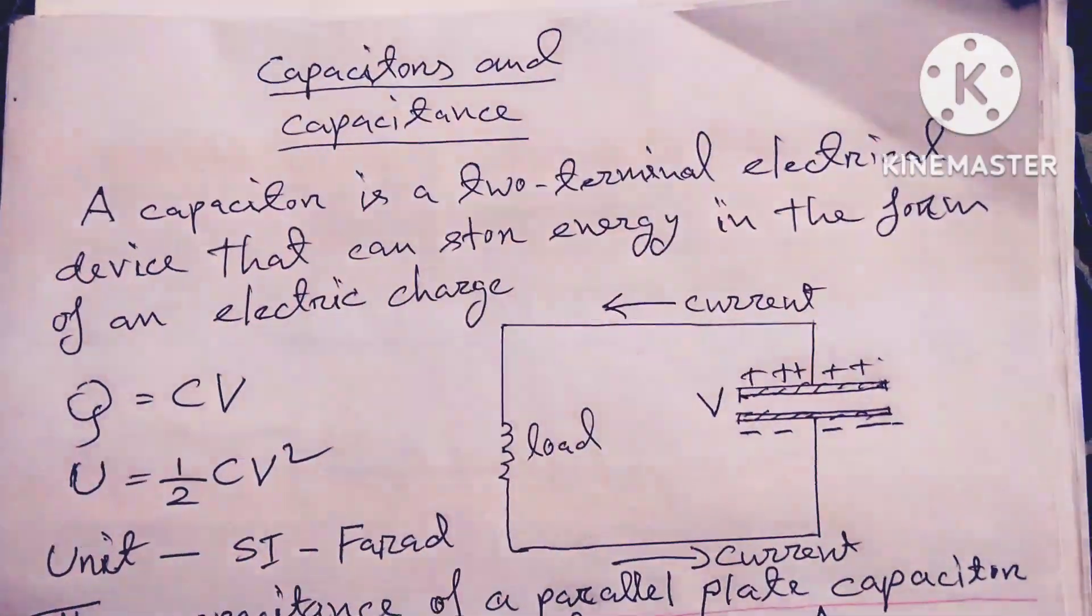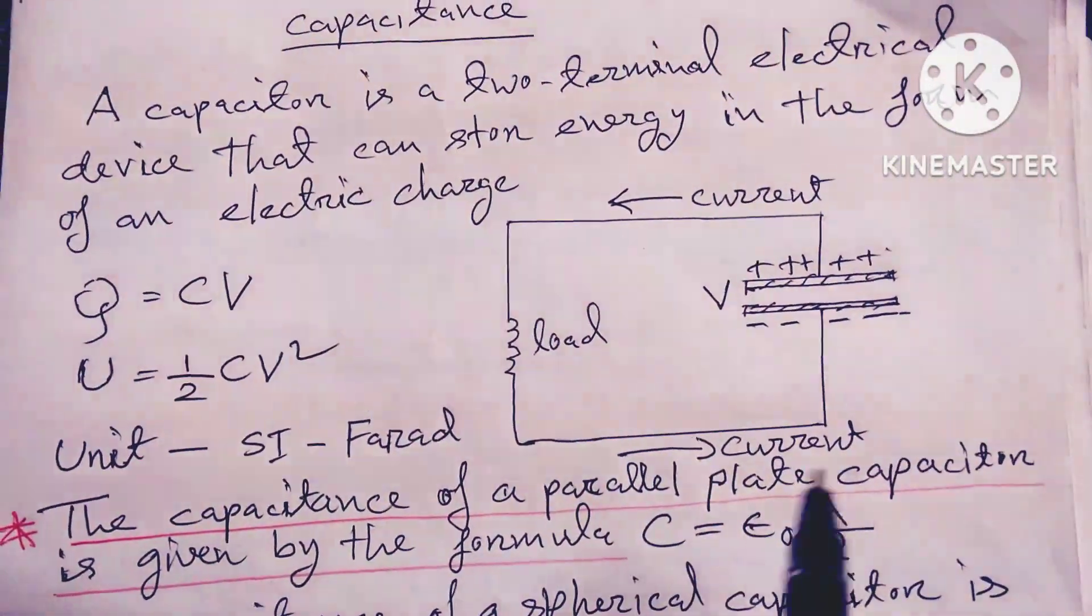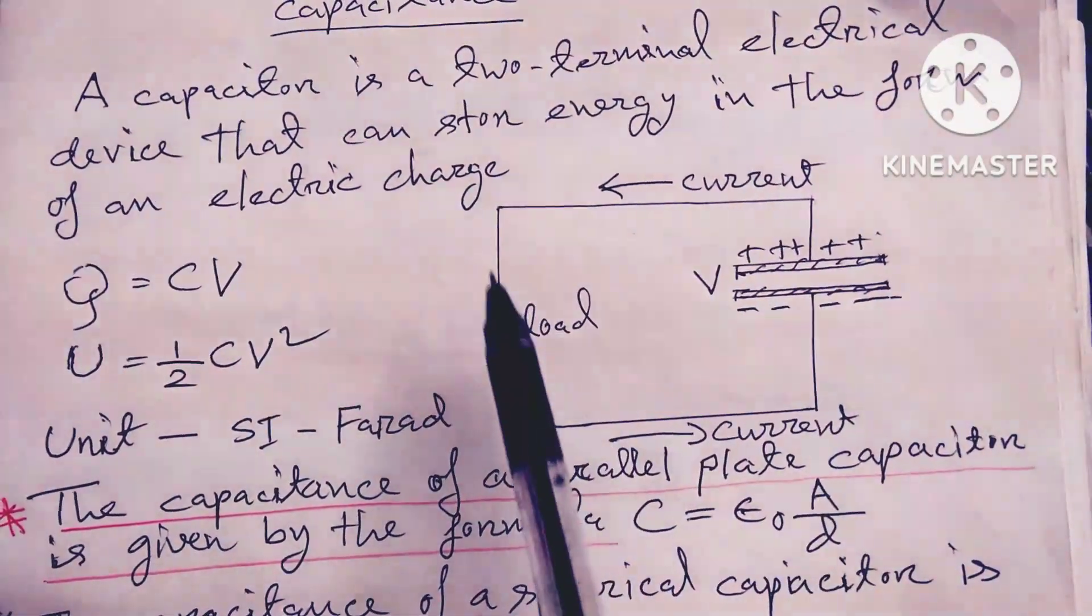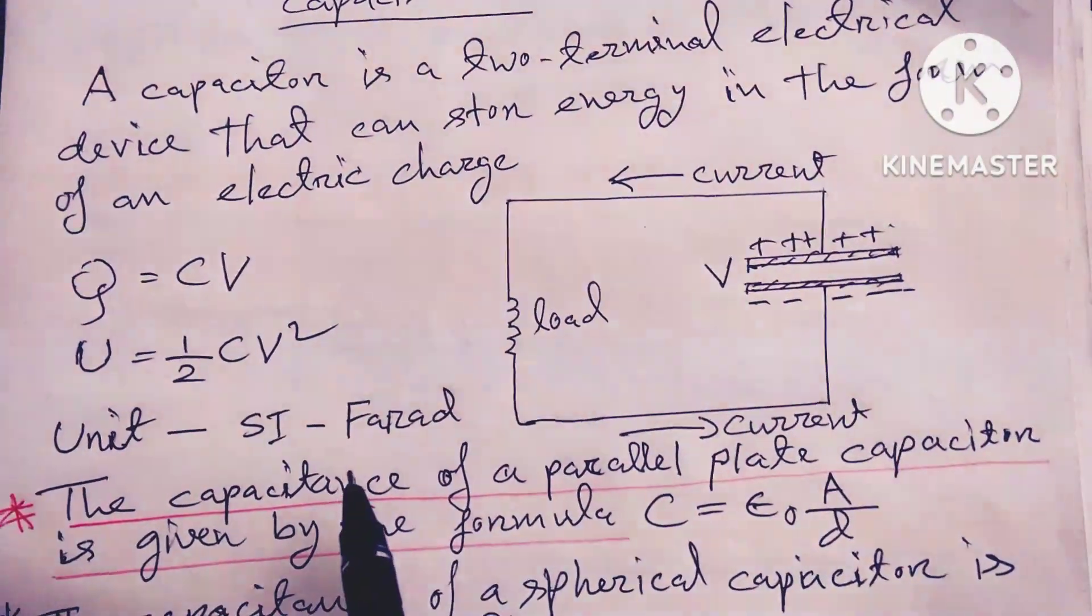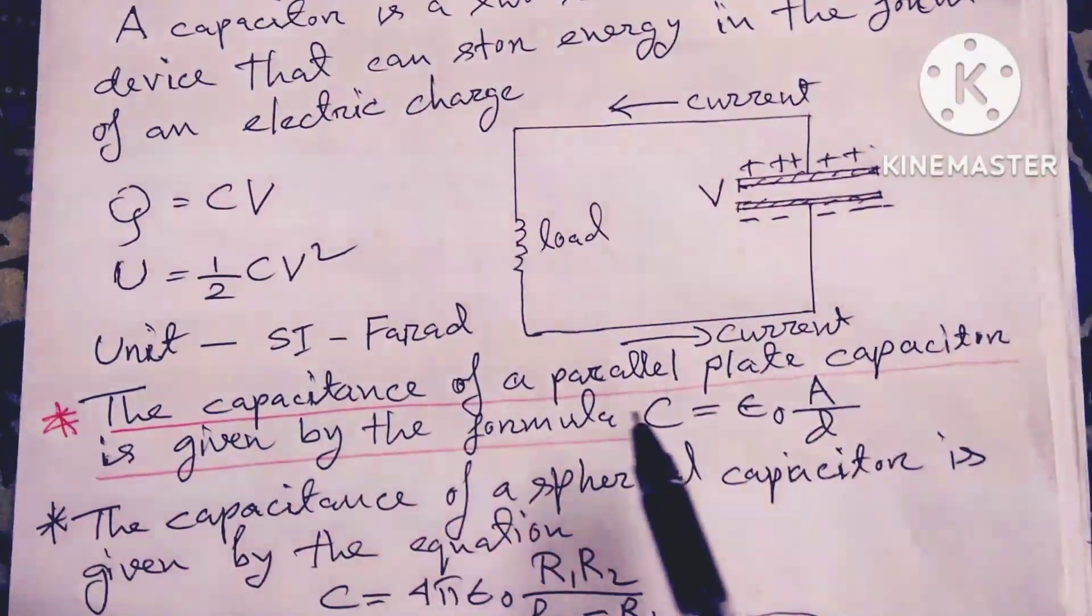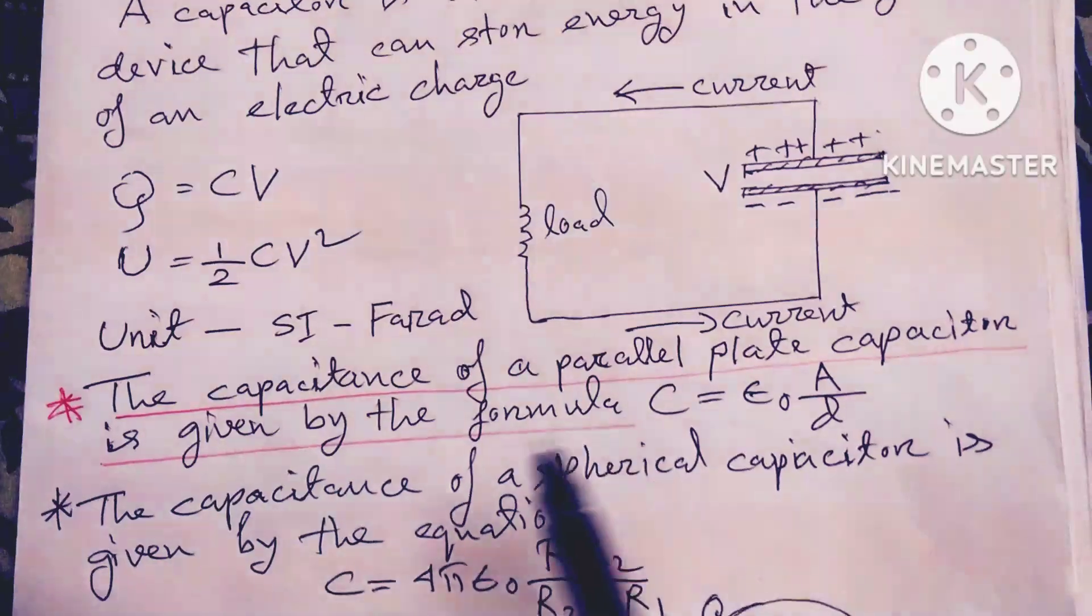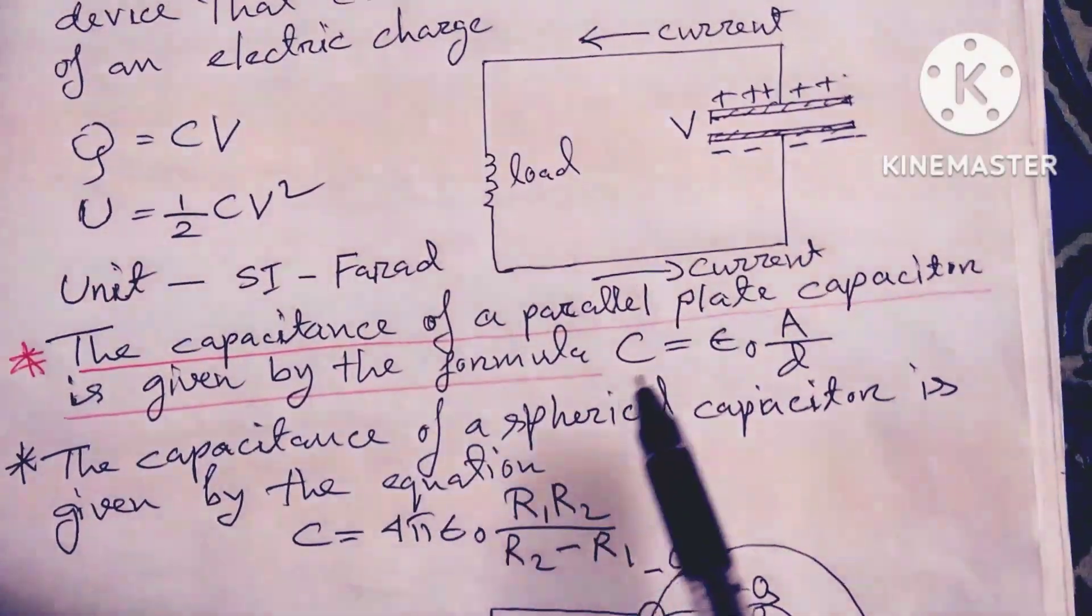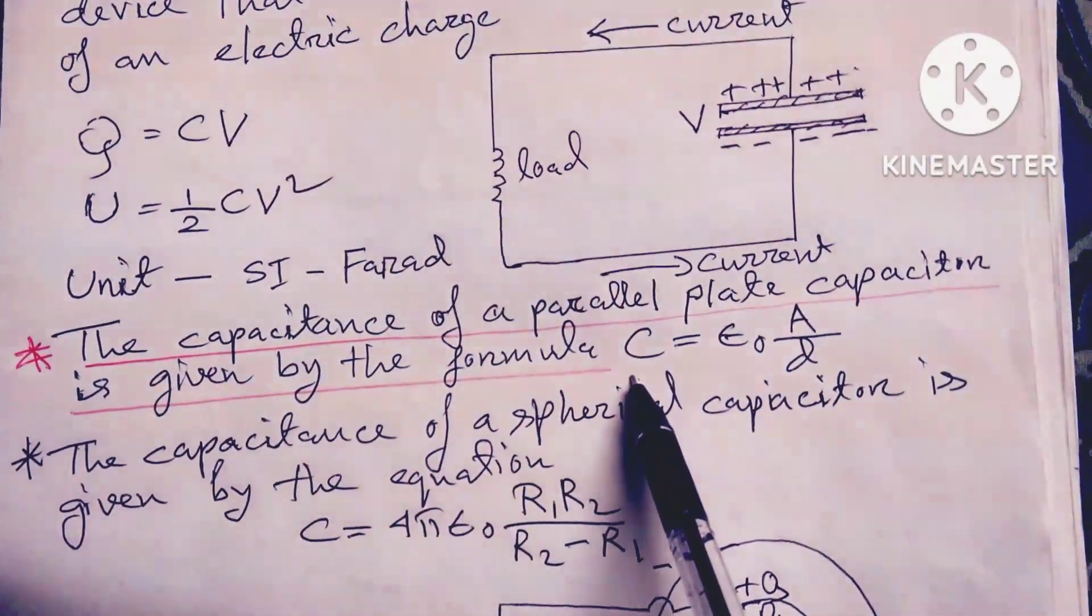1/2 CV². Current is going this way and this is the load. The SI unit is farad. The capacitance of a parallel plate capacitor is given by formula C = ε₀A/d.